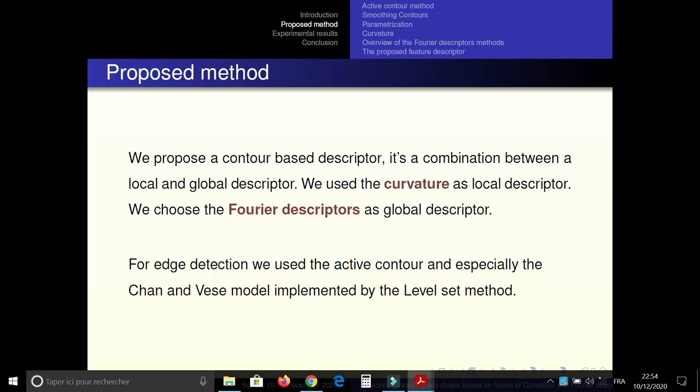Here we propose a contour-based shape descriptor for fossil classification, especially the Brachiopods. The proposed descriptor is a combination between local and global descriptor. We use the curvature as local descriptor and Fourier descriptor presents a global information of the contour. For edge detection we use the Active Contour method and especially the Chan-Vese model implemented by the level set method.